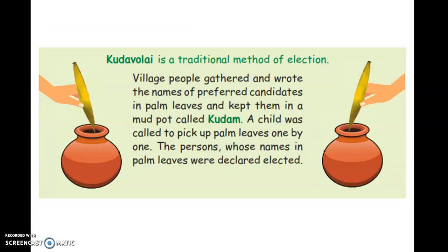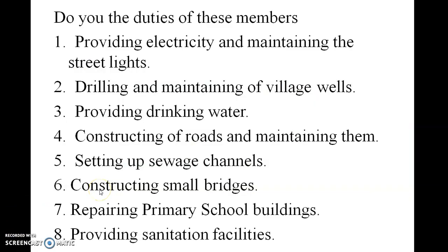Kudavole is a traditional method of election. Village people gathered and wrote the names of preferred candidates on palm leaves and kept them in a mud pot called kudam. A child was called to pick up palm leaves one by one. The persons whose names appeared on the palm leaves were declared elected.